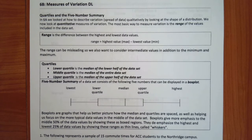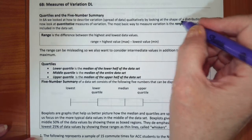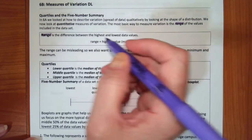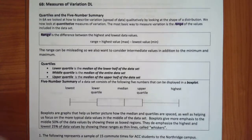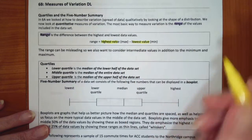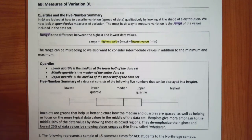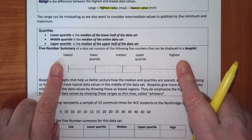One of the things we want to talk about, of course, is the range of values. Our range is the difference between the highest and the lowest values. We'll have a highest value and a lowest value in our data set, and if you subtract the minimum from the maximum, that gives you the range. We want to know how much difference there is between the highest and lowest values.